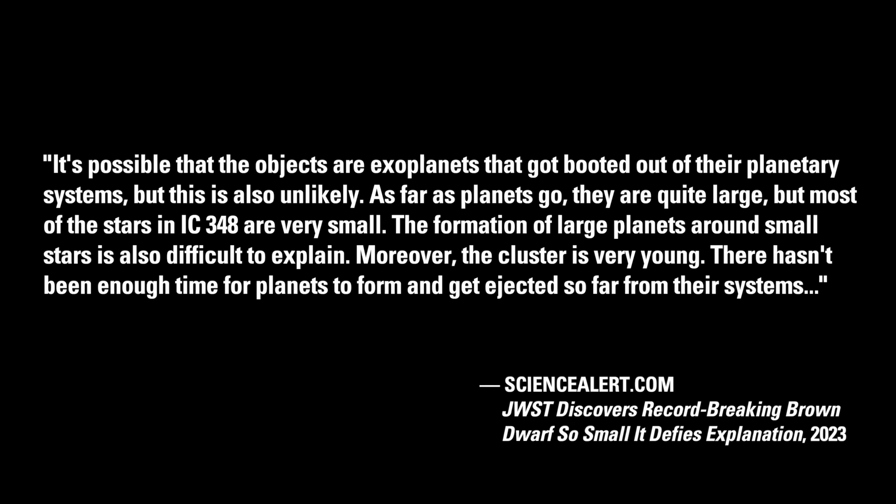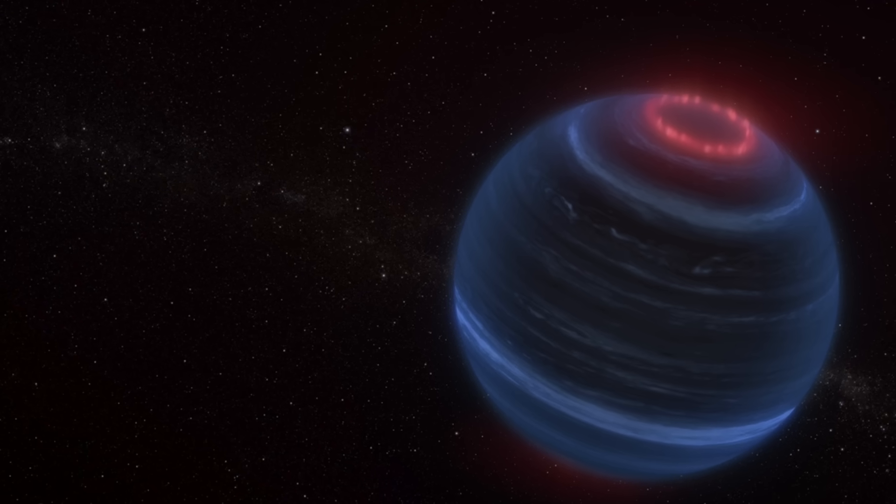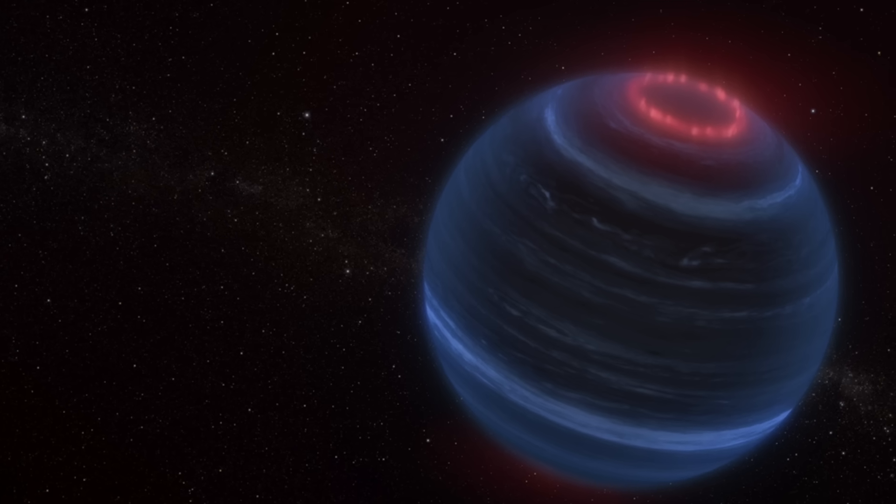It's possible that the objects are exoplanets that got booted out of their planetary systems, but this is also unlikely. As far as planets go, they are quite large, but most of the stars in IC 348 are very small. The formation of large planets around small stars is also difficult to explain. Moreover, the cluster is very young — there hasn't been enough time for planets to form and get ejected so far from their systems. The discovery of so-called brown dwarfs, whose very existence is gravitationally impossible, is not surprising from the Electric Universe perspective.